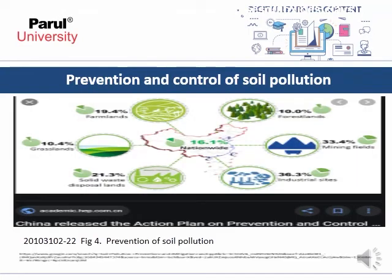A figure shows the prevention and control of soil pollution in China, breaking down contaminated land types: industrial sites 36.3%, solid waste disposal land 21.3%, farmland 19.4%, grassland 10.4%, and forest land 10%. China released an action plan on prevention and control of soil pollution, and similarly other countries have followed to reduce pollution for the benefit of human health.